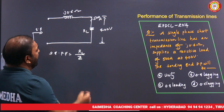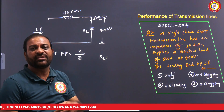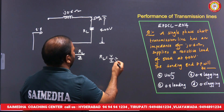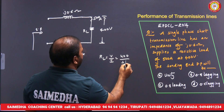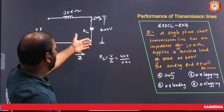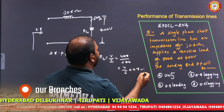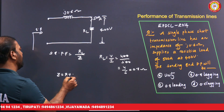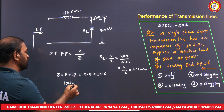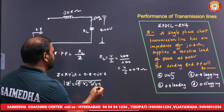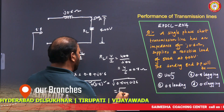The total impedance Z = RL + jX = 0.8 + j0.6 ohms. The magnitude of Z = √(0.8² + 0.6²) = √(0.64 + 0.36) = √1 = 1 ohm.